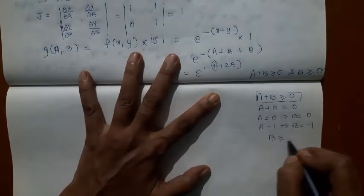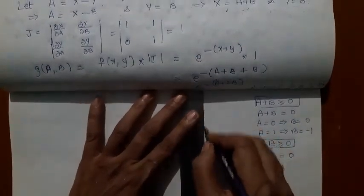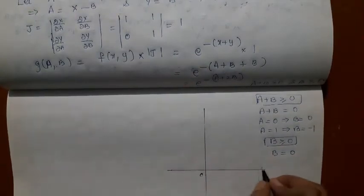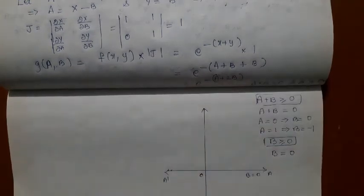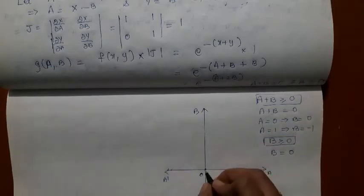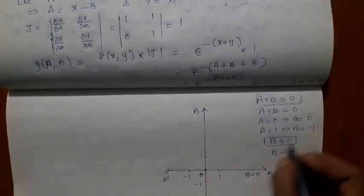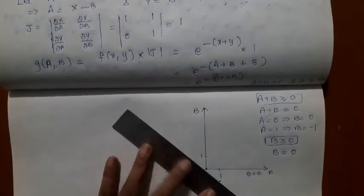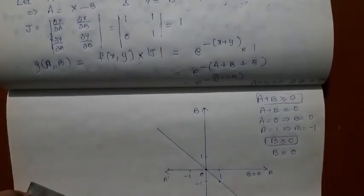The next condition is B ≥ 0, represented by the equation B = 0. Plotting these on the A-B axes: the point (1, −1) is located here. Joining the two points gives the line A + B = 0. Now we determine which region satisfies each condition.